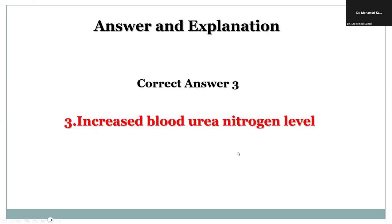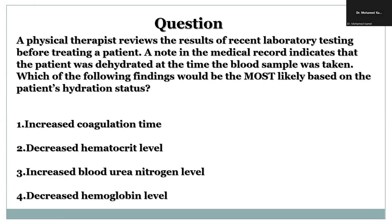The correct answer is increased blood urea nitrogen level. The blood urea nitrogen test measures the amount of nitrogen in blood that comes from the waste product urea, and urea is made when protein is broken down in the body. A blood urea nitrogen test is performed to assess kidney function, and an increase in blood urea nitrogen level can be indicative of dehydration.